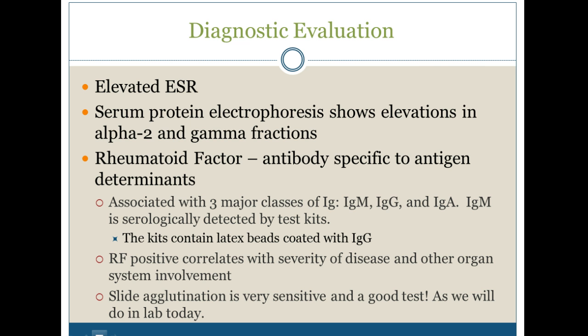In order to diagnose this, the first thing we might do is a sed rate and see that it's elevated. As you know from chemistry, an elevated sed rate doesn't tell you much — you have to do more testing. We would see a serum protein electrophoresis showing elevations in the alpha-2 and gamma fractions. Even better, we can do a rheumatoid factor test, which is an antibody specific to different antigen determinants. We see it associated with three major classes: IgM, IgG, and IgA, although IgM is detected serologically by test kits. The kit contains latex beads coated with IgG, but IgM is more prevalent in the patient.